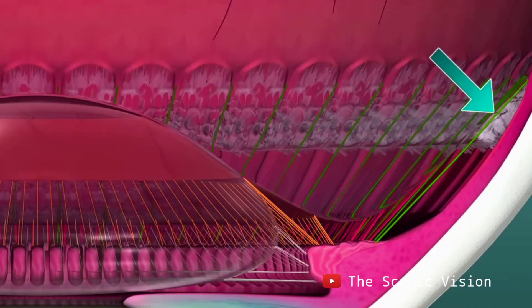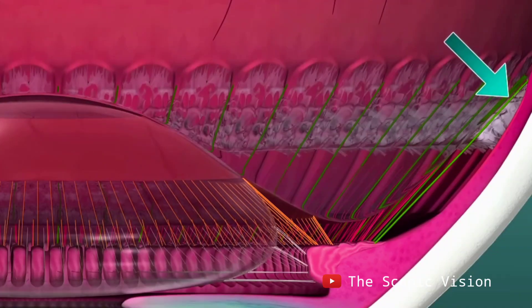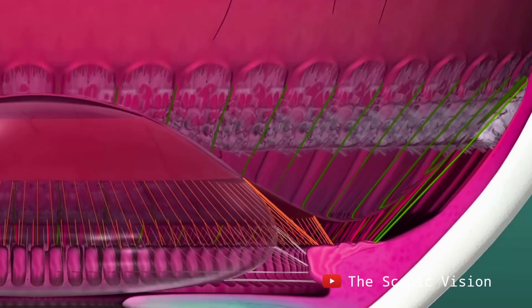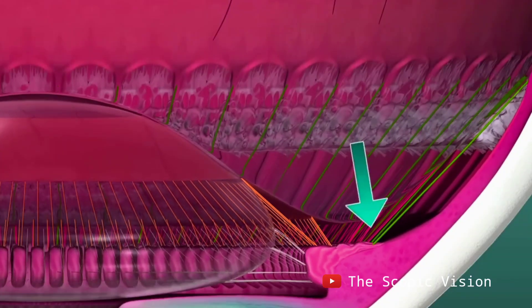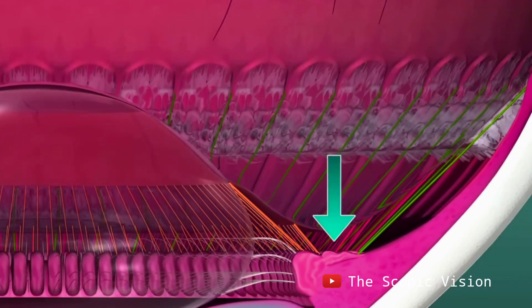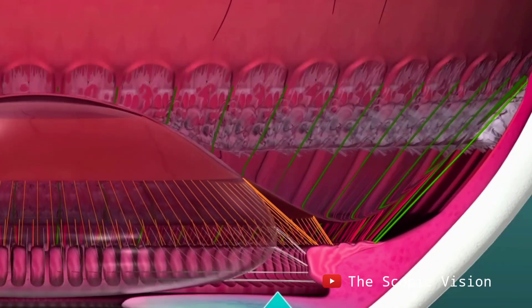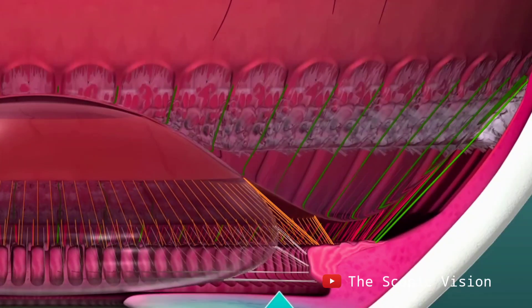The lens changes its shape and size to focus on close or distant objects. Ciliary muscles control the lens's shape. The lens gets thicker for near vision and thinner for distant vision.